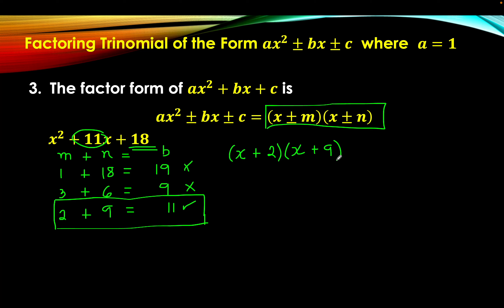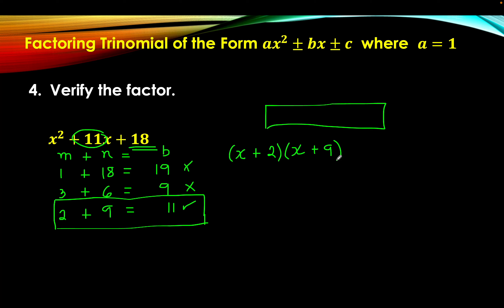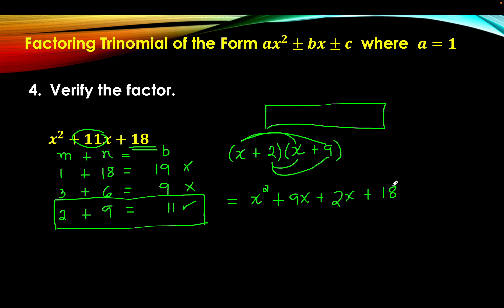That is step 4: verify whether the factor satisfies the given trinomial. We need to multiply the two binomials to check if it gives x squared plus 11x plus 18. So: x times x gives x squared; x times 9 gives 9x; 2 times x gives 2x; and 2 times 9 gives 18. Combining like terms: x squared plus 9x plus 2x gives 11x, plus 18. The quantity x plus 2 times the quantity x plus 9 satisfies the trinomial x squared plus 11x plus 18.